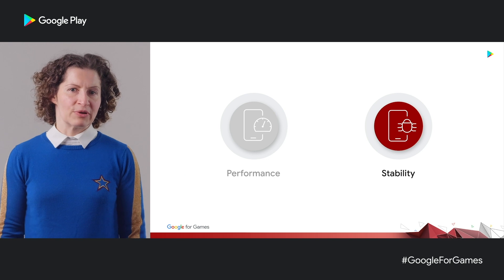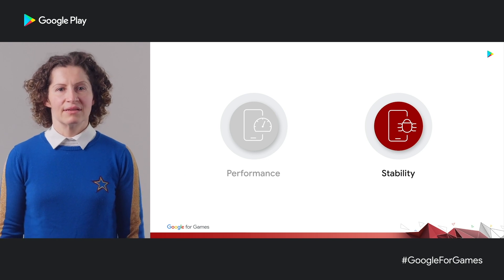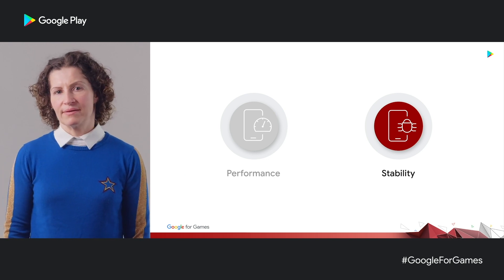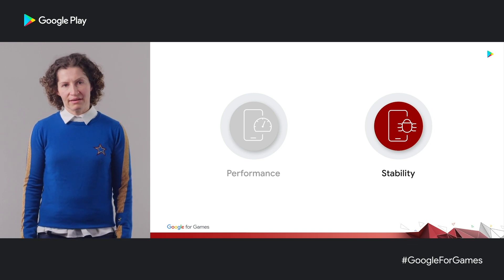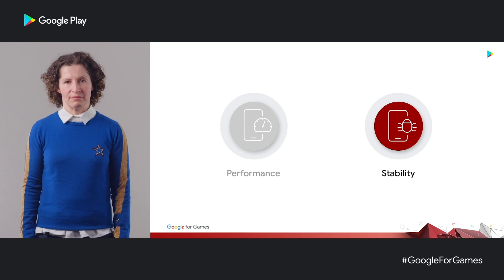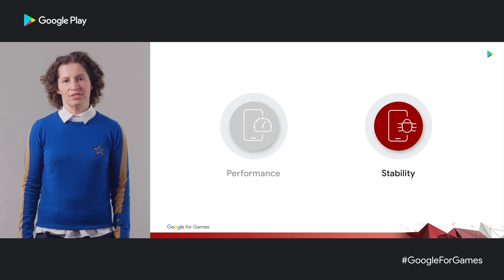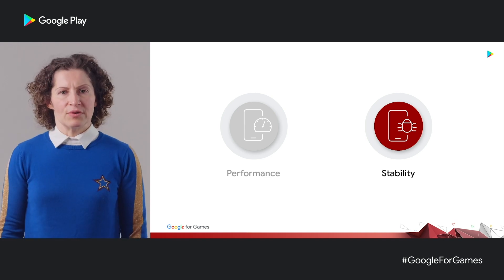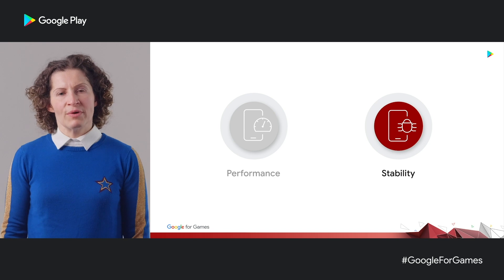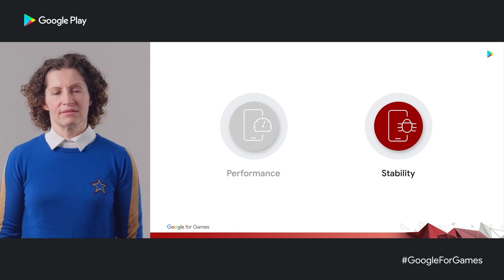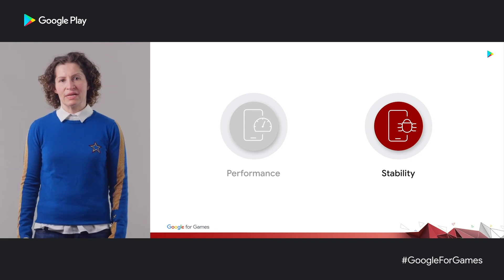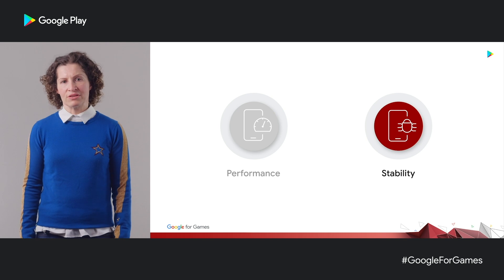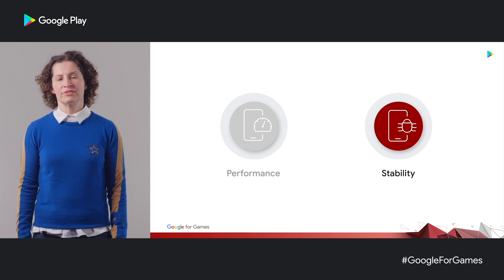I've talked about your game's performance and fidelity. Now let me talk about stability — by which I mean crashes and ANRs. To a user, it doesn't matter which: they're equally jarring experiences, so it's important you pay attention to both. Those of you who use Android Vitals will know we already report on crashes and ANRs. What we're missing is the actionability I talked about earlier — not only telling you that there is a problem, but helping you to fix it.